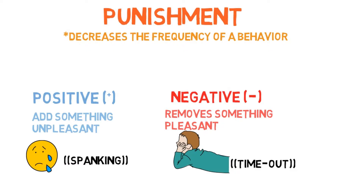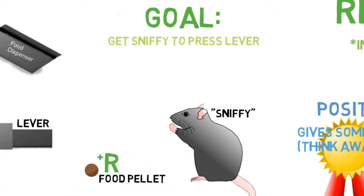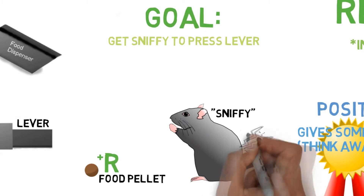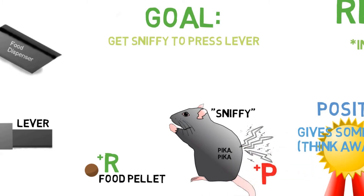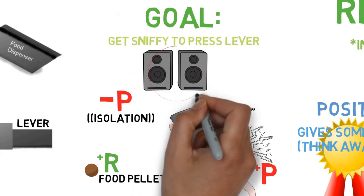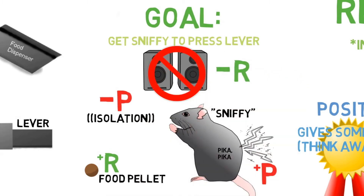Alright, so a punishment decreases a behavior: a positive punishment does so by adding something unenjoyable, and a negative punishment does so by taking away something enjoyable. So let's translate all of these to our mouse. We could give him food when he's close to the lever — that's a positive reinforcement. Or we could shock him if he moves away from the lever — that's positive punishment. We could reduce the time he gets to spend with other mice outside of the cage until he gets close — a negative punishment. Or if we had a loud noise playing, we could turn it off when he gets close to the lever — a negative reinforcement.